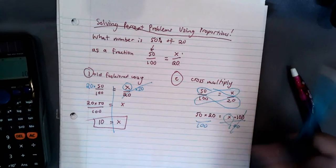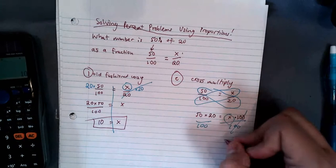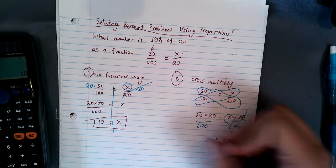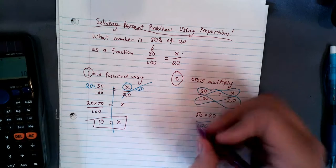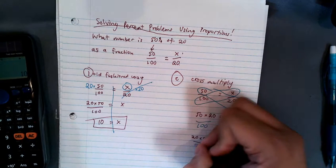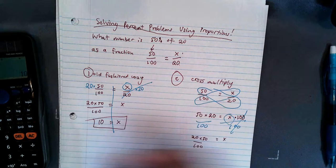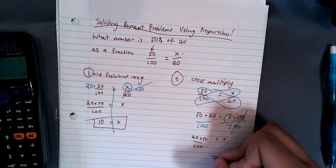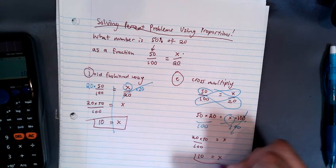Cancel out. X equals, and you look at that, we get the same kind of thing. 20 times 50 over 100, which we already calculated. 20 times 50 equals 10. Perfect.